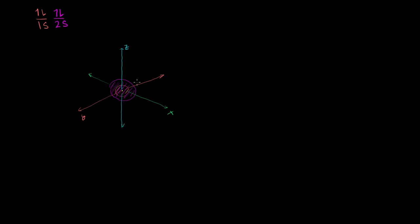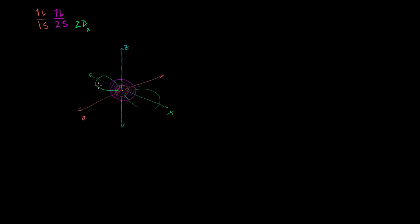You have a p orbital that goes along each of those axes. You have your 2px orbital, which looks like a dumbbell shape going in the x-direction, in both directions - it's actually symmetric. Remember, these are really just probability clouds, but it's helpful to visualize them as things we would see in our world. That is the 2px orbital.